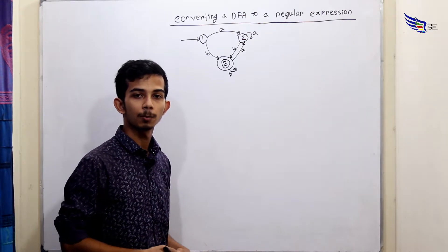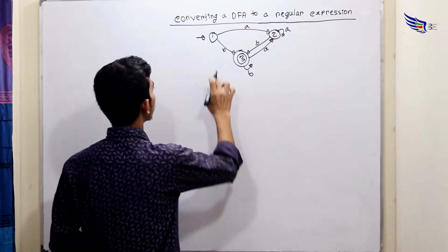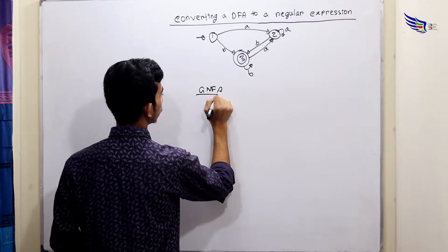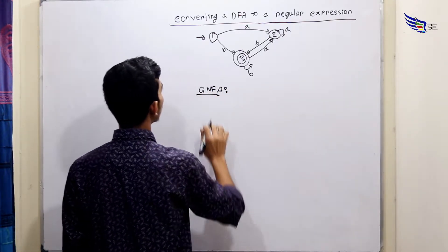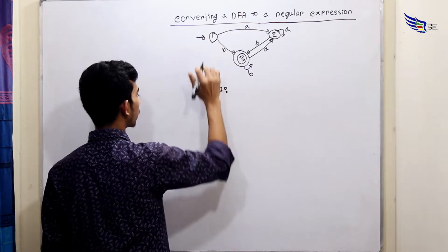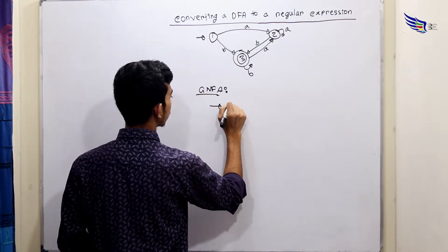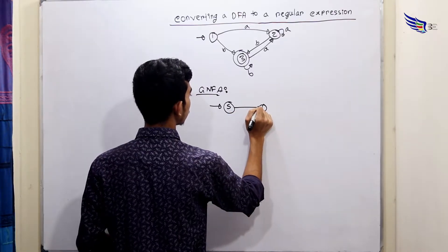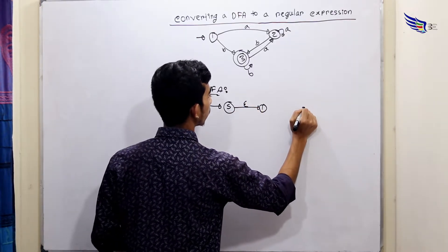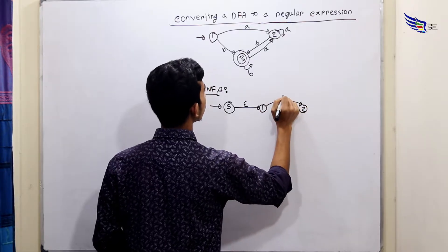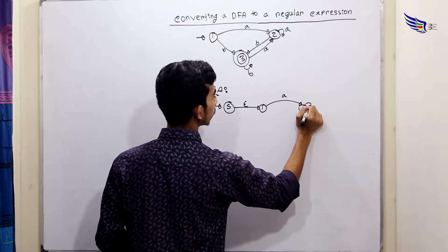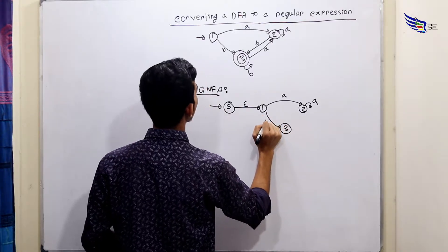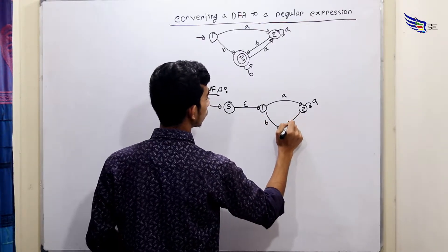We will convert the machine to a final state. This will produce the GFA design. When we have the equivalent GFA design for the machine, the machine will be used to represent the start state, and the major changes will be used to convert the machine to a regular expression from the different parts.